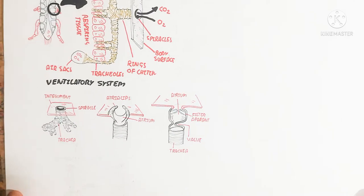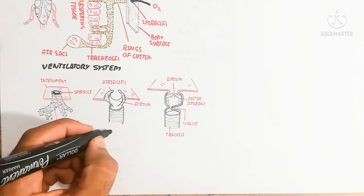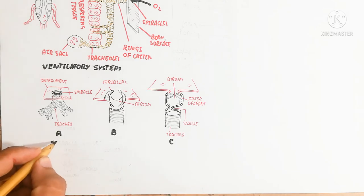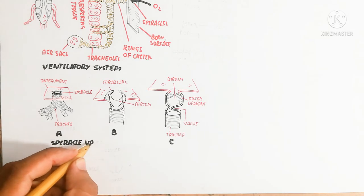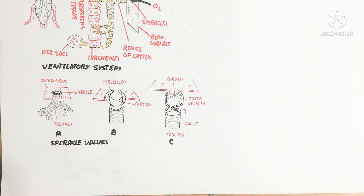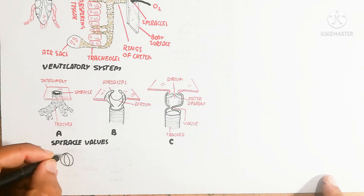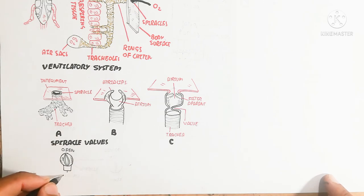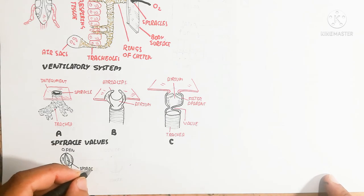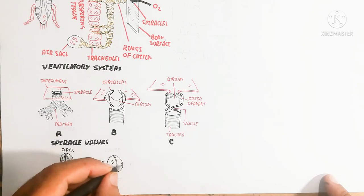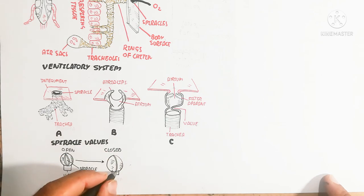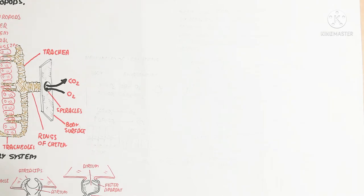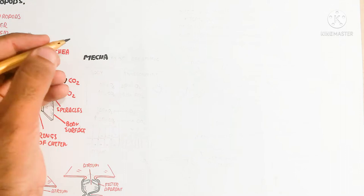The atrium functions as a filter, removing wasteful or harmful content from incoming air before it enters the trachea. The tracheal wall has a spherical structure that can open and close, similar to a stomata — giving it an open and closed system, as seen in the diagram.